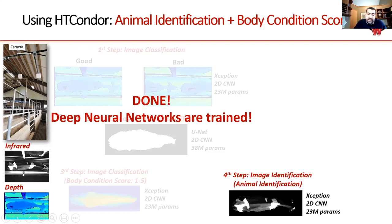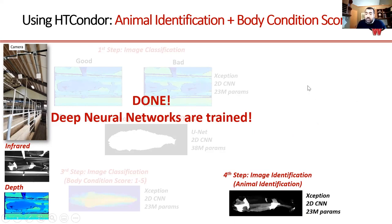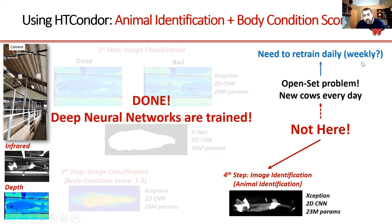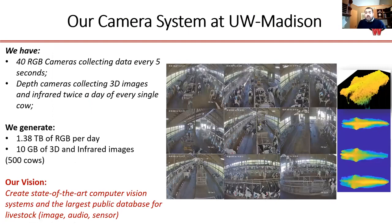For many networks, training is a done deal — train once and you're finished. But animal identification is an open-set problem: new animals enter the farm and milking system every day, so we need to retrain daily or weekly with a classifier updated for new cows. This currently takes approximately 10 hours using one GPU. With more GPUs available we could decrease training time and potentially retrain every night, though scaling to larger farms would significantly increase the computational resources required.